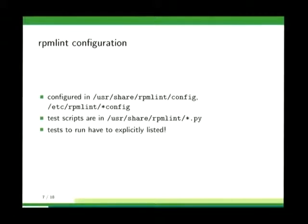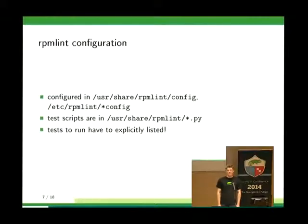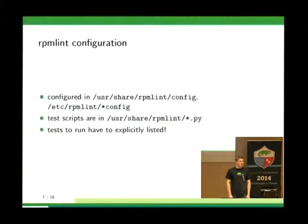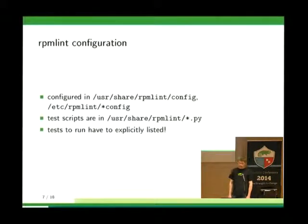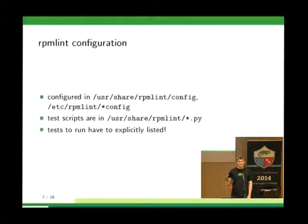To understand RPM-Lint, you want to know how it's configured. There's a global config file in /usr/share, and package-specific config files in /etc. The test scripts are individual Python files, also in /usr/share. RPM-Lint does not automatically load all checks — you have to explicitly list them in the config file. Just writing a test and putting it in /usr/share doesn't help; you need to add it to a config file. If you want to contribute to the build system, you have to take care of RPM-Lint Mini, which ignores those files and needs special ones.